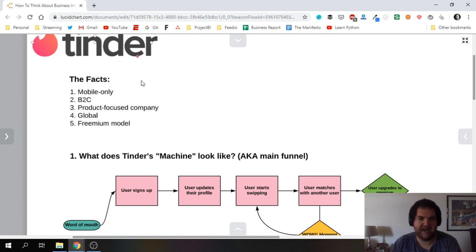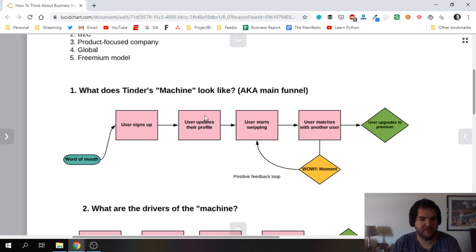So once you understand at a very high level what we're dealing with - a mainly mobile company, B2C, etc. - the next thing I like to do is try to really understand the main what I call the engine of the company. So I like to think of the company in terms of an engine. We have inputs and outputs and an engine in the end has one main purpose which is to produce or do something. So we need to understand the company's main goals and then break that down in a very logical sequential way. Another way to think about this approach is to develop the main funnel of the company. So if we think of Tinder's machine or main funnel, it goes like this: the user will sign up mostly through word of mouth, they've admitted this themselves, very viral type of tool.